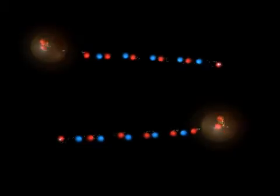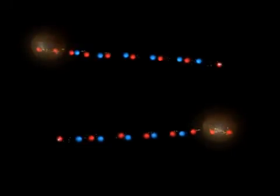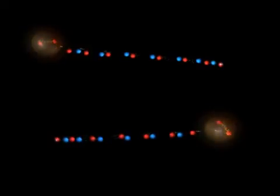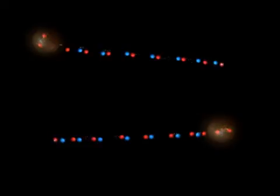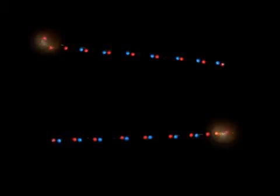The quarks continue to move apart from each other, once again stretching the gluon field between them. The gluon field breaks again by forming a quark and an anti-quark pair. This process is repeated over and over again.